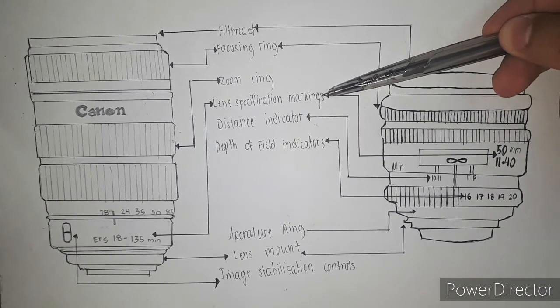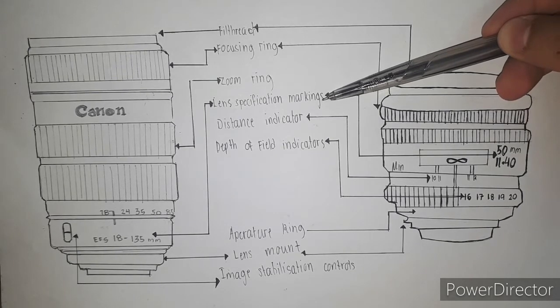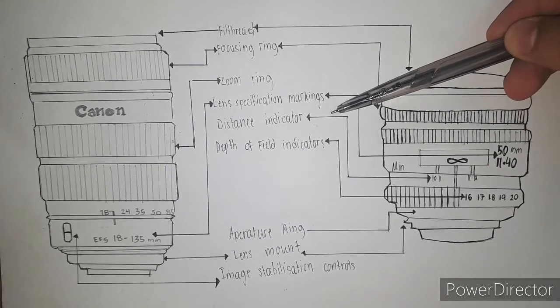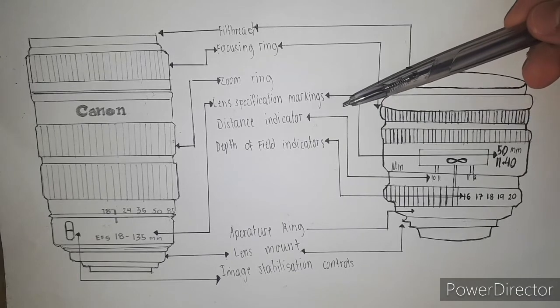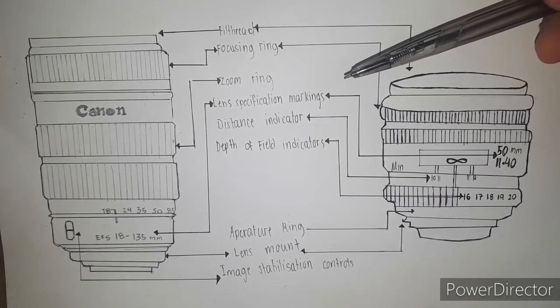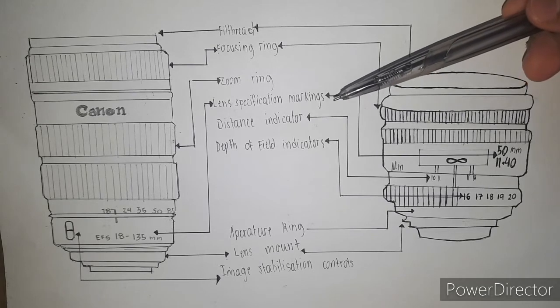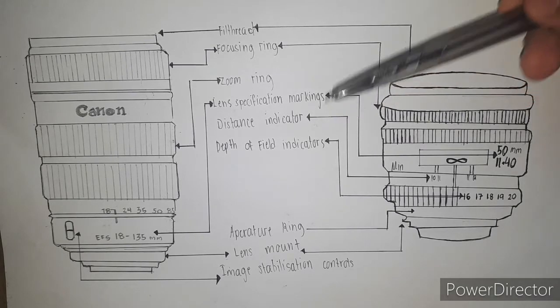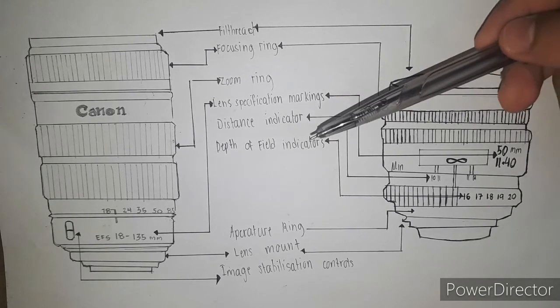Fourth is the lens specification markings. The first number or pair of numbers indicates the range of available focal lengths in millimeters. From this, you can tell what angles of view the particular lens can handle. Lower numbers mean a wider angle.